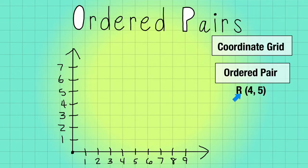Now let's look at what an ordered pair looks like. This particular ordered pair, what we would deem R, is 4 comma 5. What does that mean? Well, it's important that we know the first number tells us how many to go over and the second number tells us how many to go up.